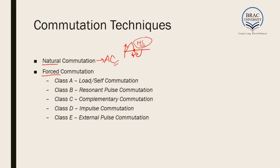Forced commutation is used in case of DC circuits. We know in case of DC there is no change in voltage over time, so the input voltage does not ever become zero. As a result the current also does not ever become zero, which poses a problem. Since the current does not decrease, we cannot switch off the SCR in a normal way. As a result we need an external circuitry to switch the SCR off. We will learn about five types of forced commutations one by one, considering DC circuits and how to turn the SCR off in those circuits.